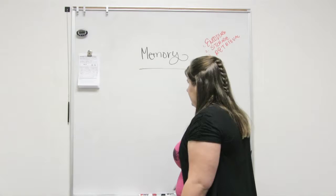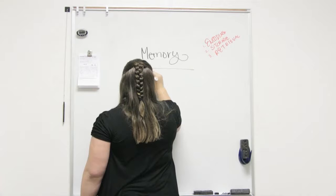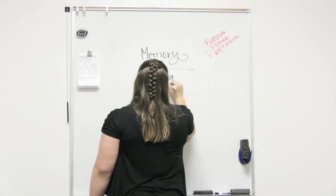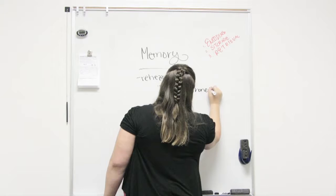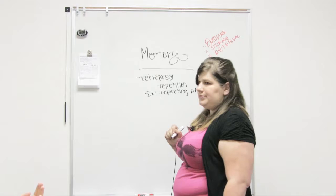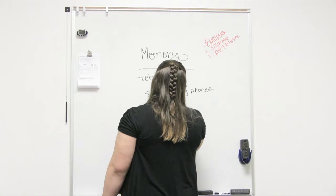What would you say is a good strategy for trying to process our short-term memory into our long-term memory? Rehearsal. Rehearsal is great. What is rehearsal? Rehearsal is just repetition — saying it over and over again. A good example would be repeating a phone number over and over again. Can you think of another example? When I moved, I had to remember my address and I could never remember it, so I just had to keep repeating it.